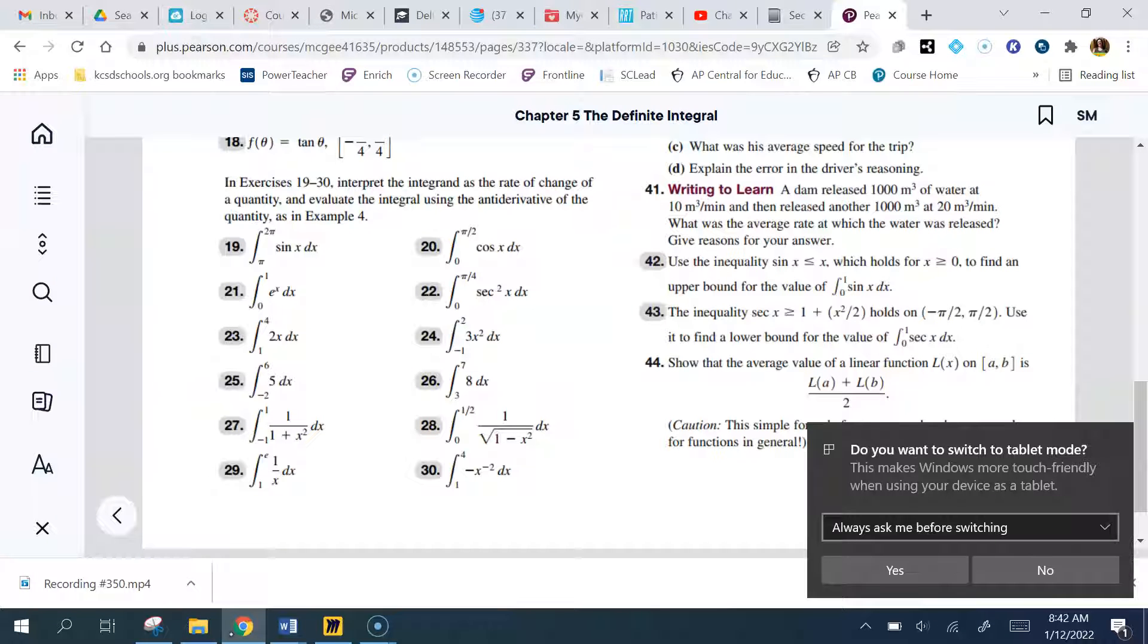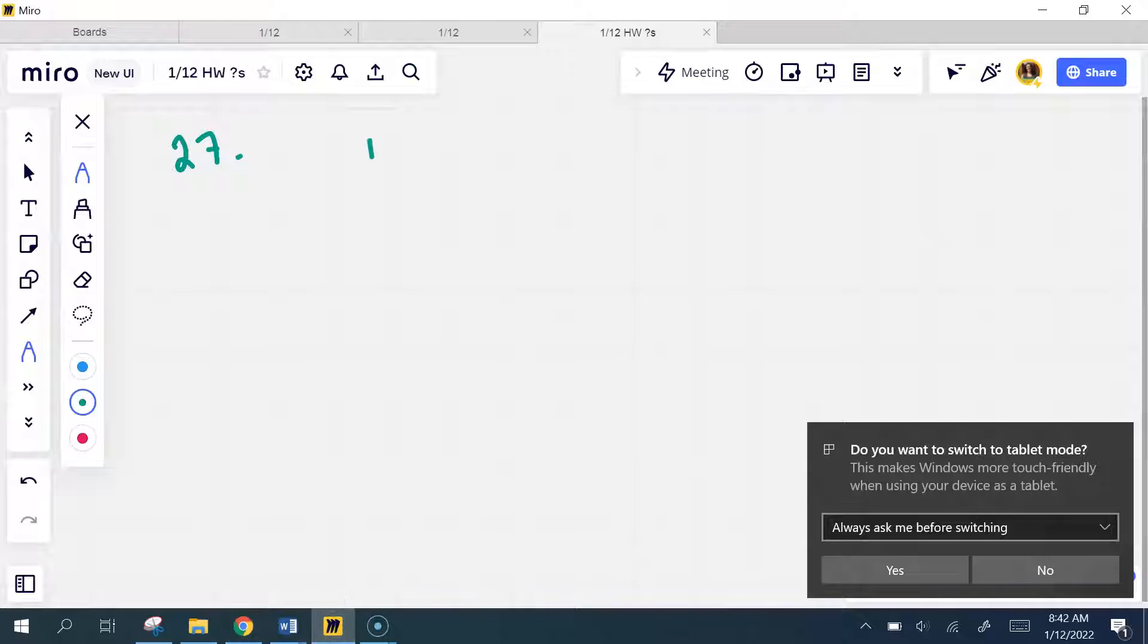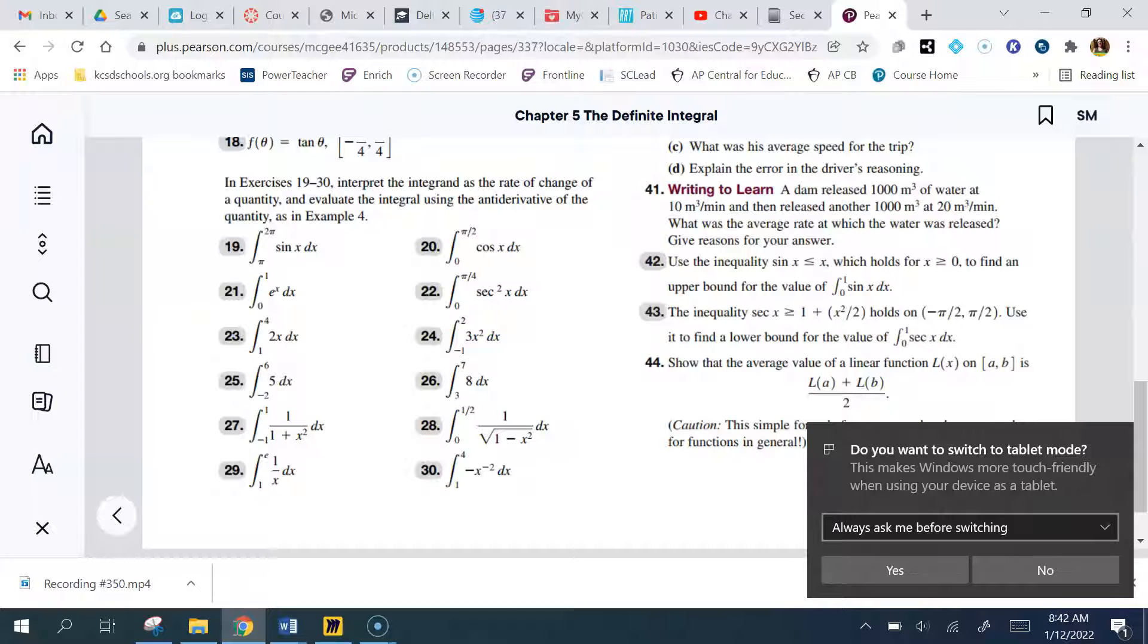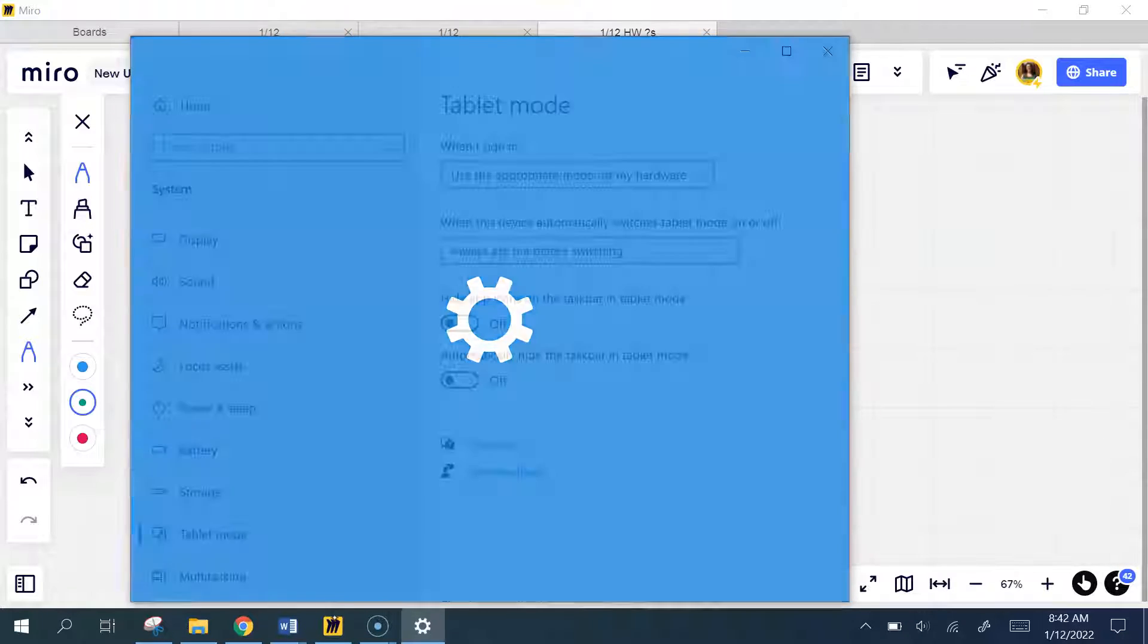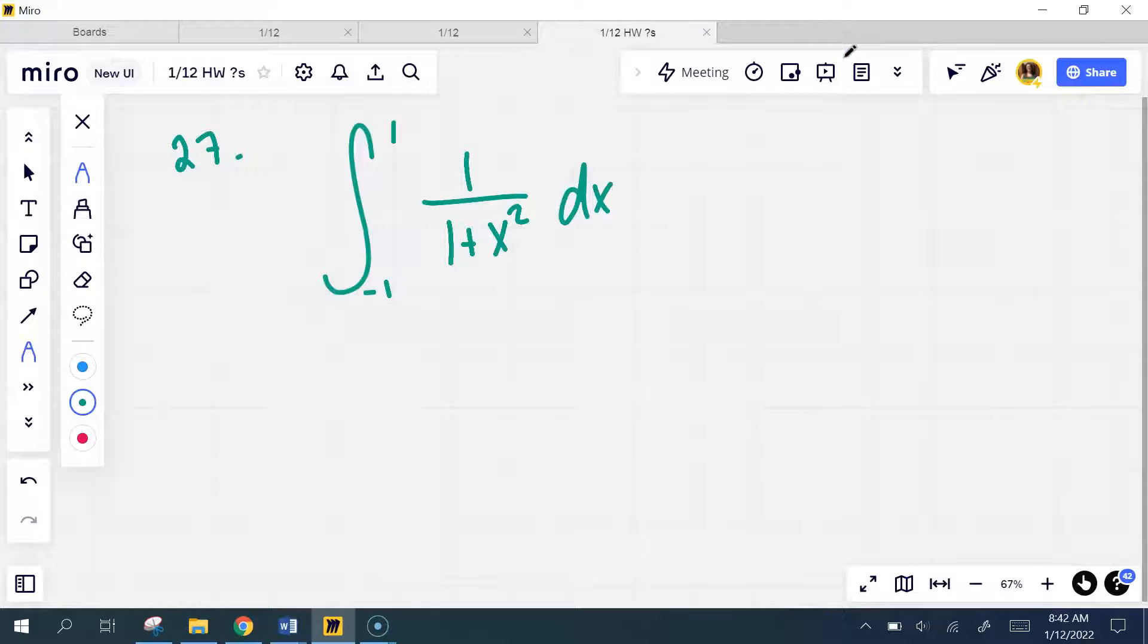Just put the book here. Number 27 is the integral from negative 1 to 1 of 1 over 1 plus x squared dx. So there's really not a lot to this other than the fact that you just have to memorize those inverse trig function derivatives and integrals.